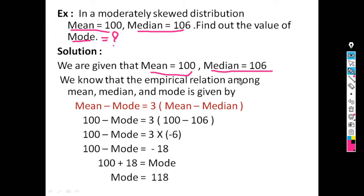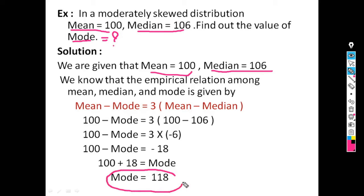Substituting: 100 − Mode = 3 × (100 − 106) = 3 × (−6) = −18. Shifting −18 to the left-hand side: 100 + 18 = Mode. Therefore, Mode = 118.